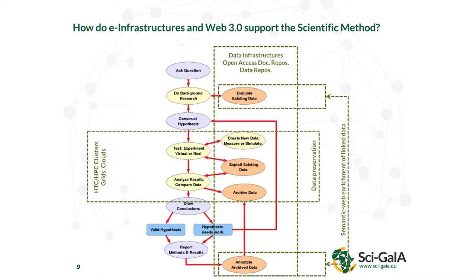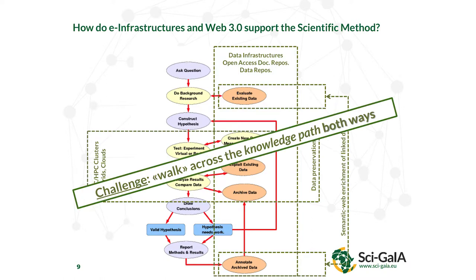The usual way researchers work is from the top to the bottom. The revolution is to go the other way around — to walk across the knowledge path from the bottom to the top, or both ways. You want to start from reading a paper, but also find the data used to write it, find the software used to analyze that data, and use the virtual machines and libraries — all in a reproducible and reusable way. The challenge is to walk across the knowledge path both ways, and this was one of our goals when we started the SciGaia project.